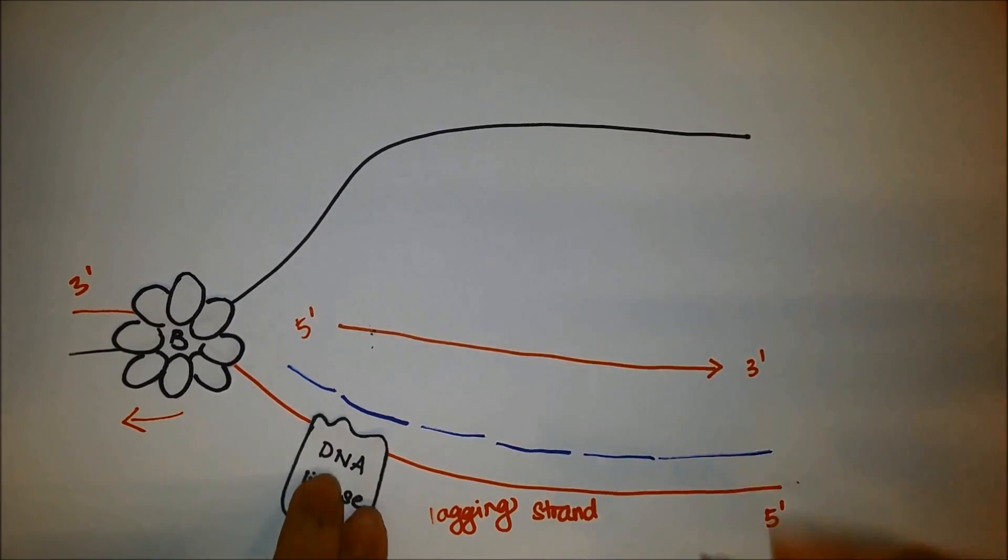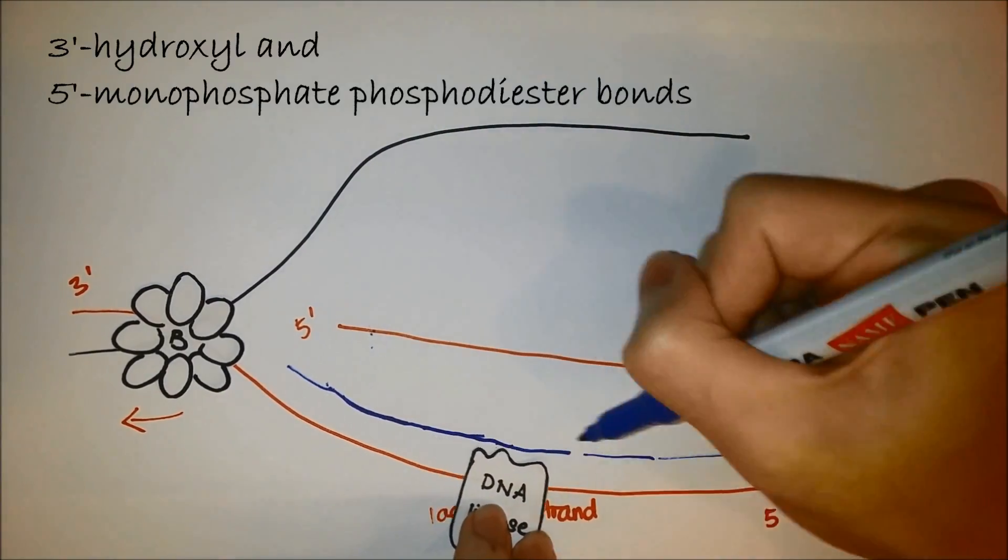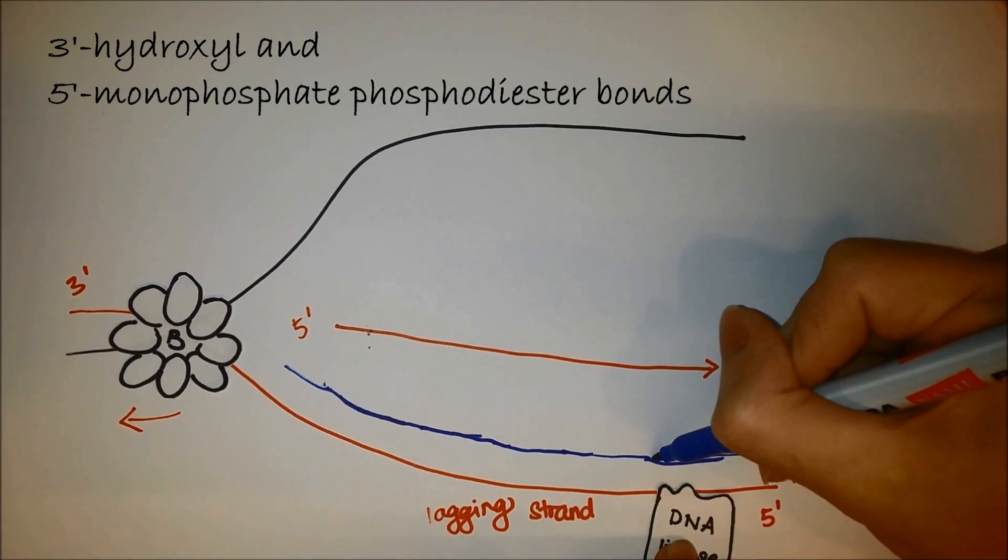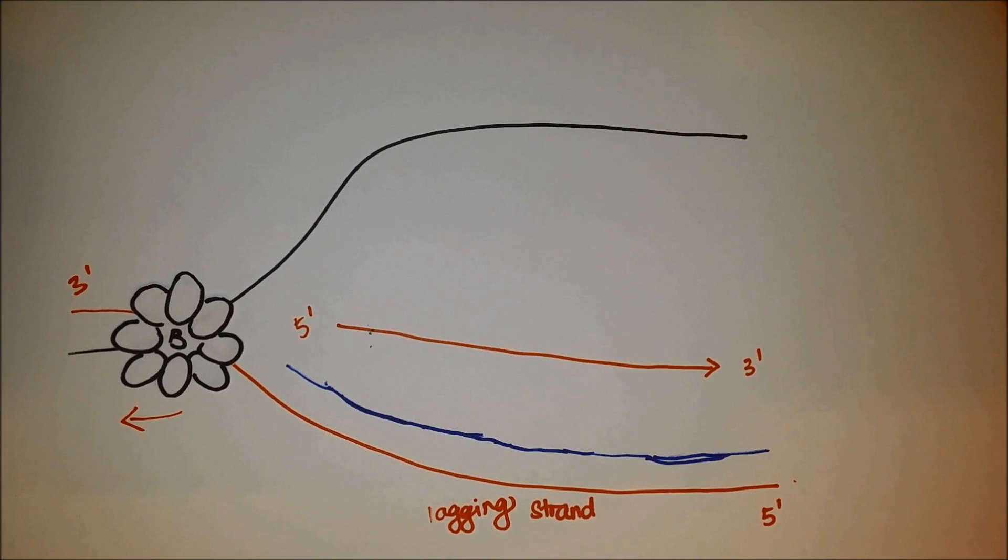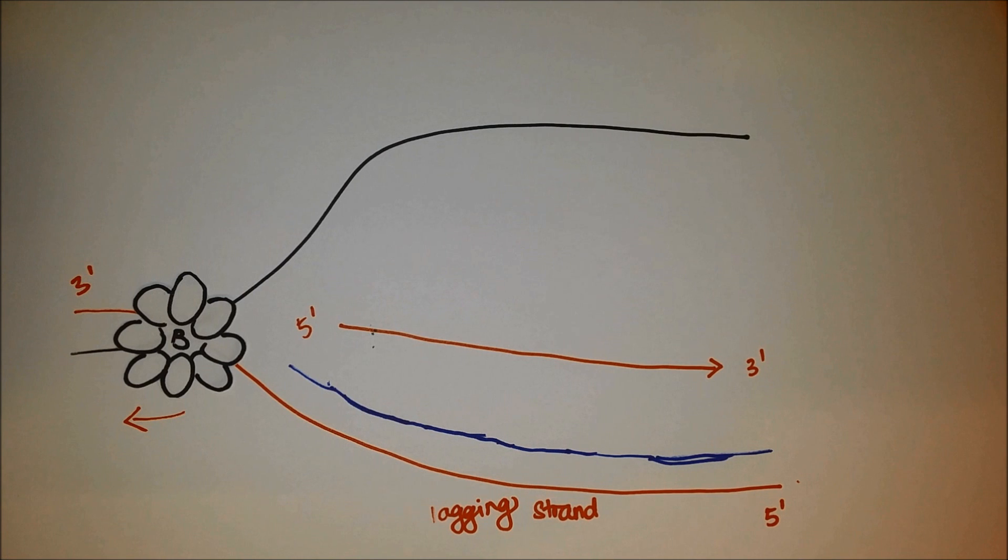DNA ligase then seals the gaps by making 3' hydroxyl and 5' monophosphate phosphodiester bonds using energy released from ATP. As a result, a continuous lagging strand is formed.